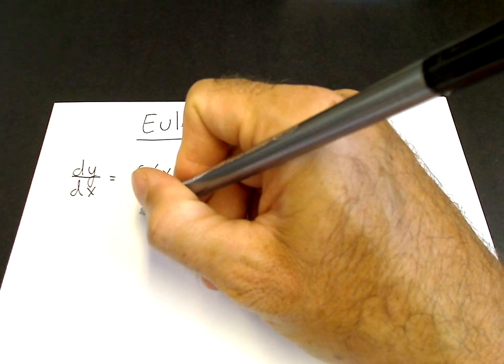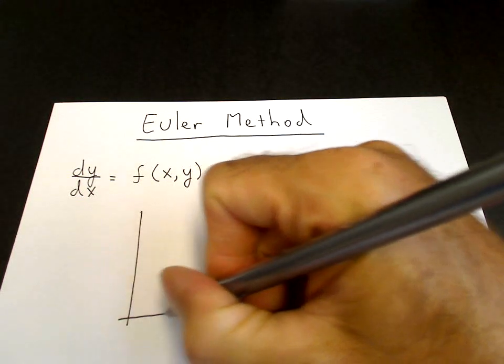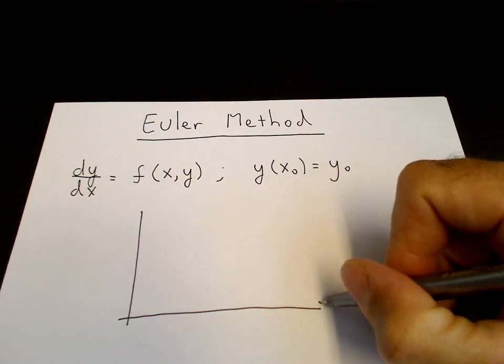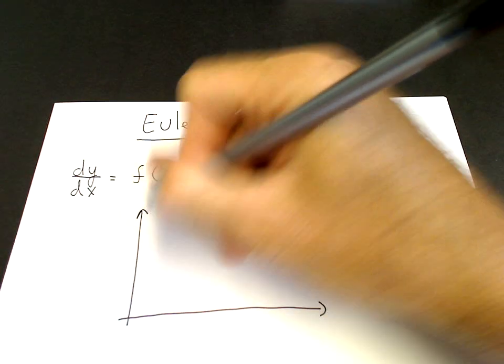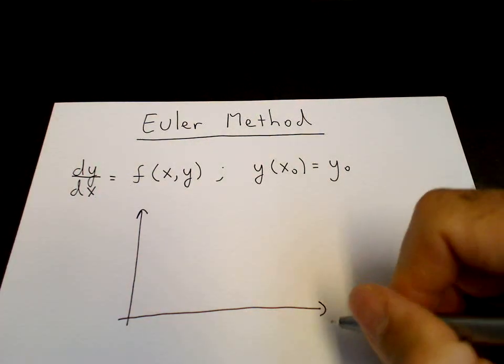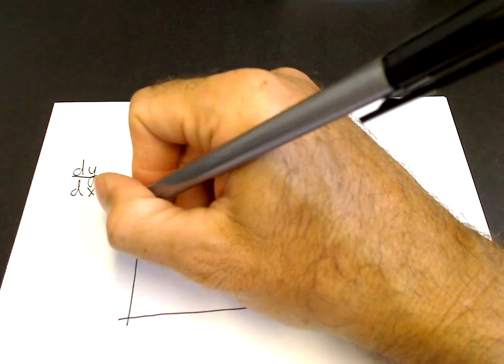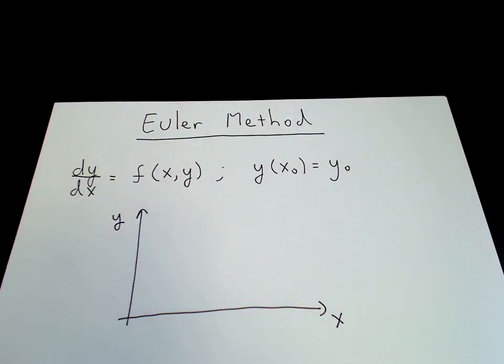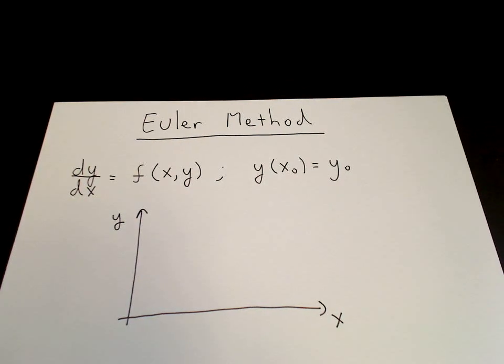So let's draw the graph. A numerical solution means that we obtain a graph of the function. This is the x-axis. This is the y-axis. So we find a graph of the function y equals y of x.